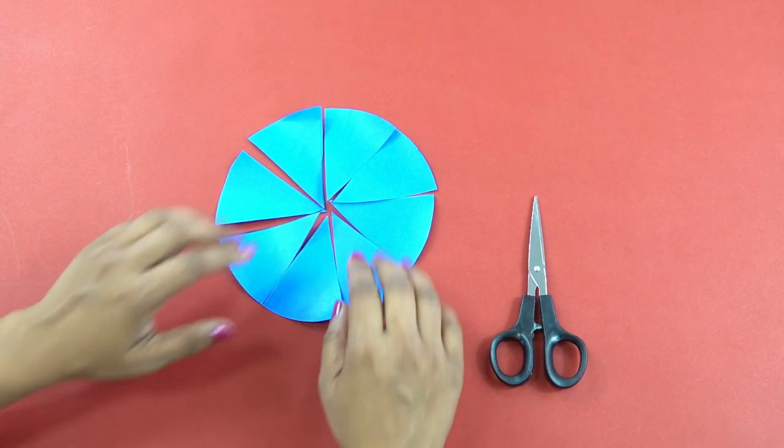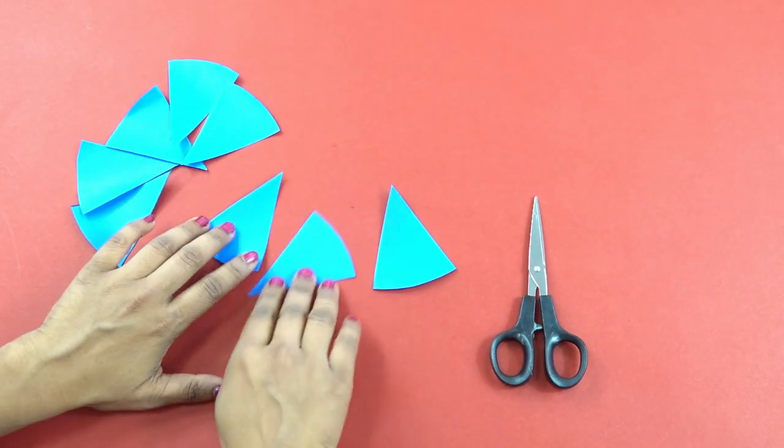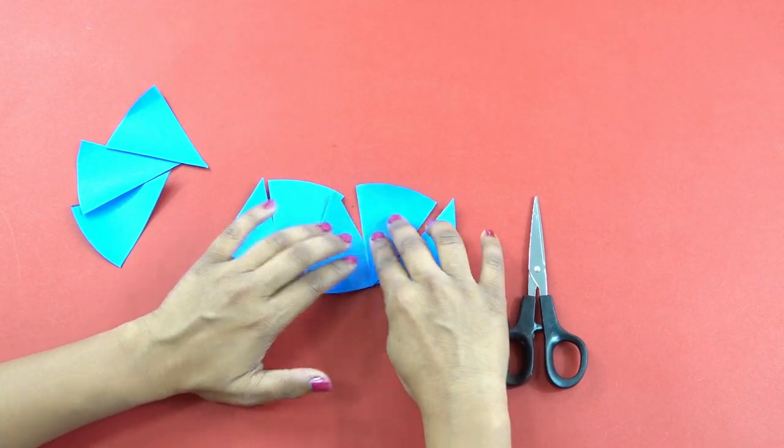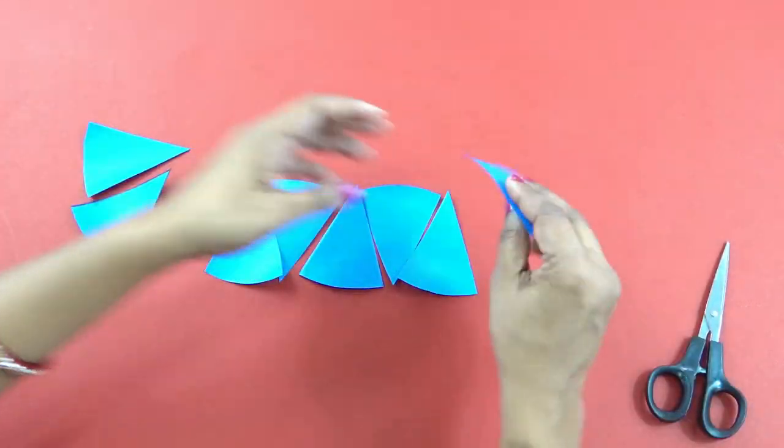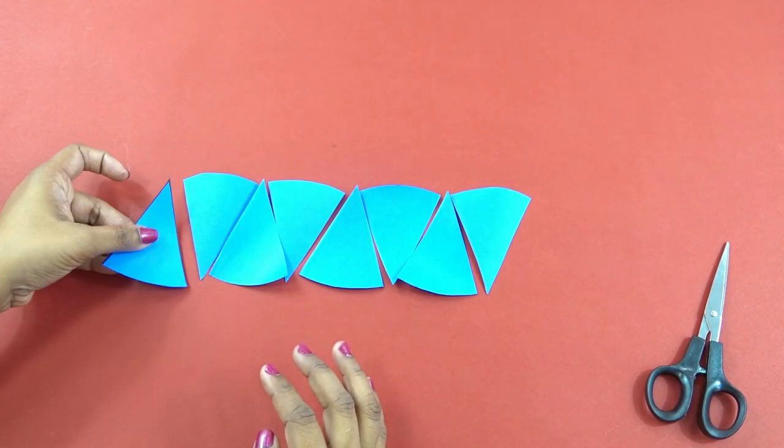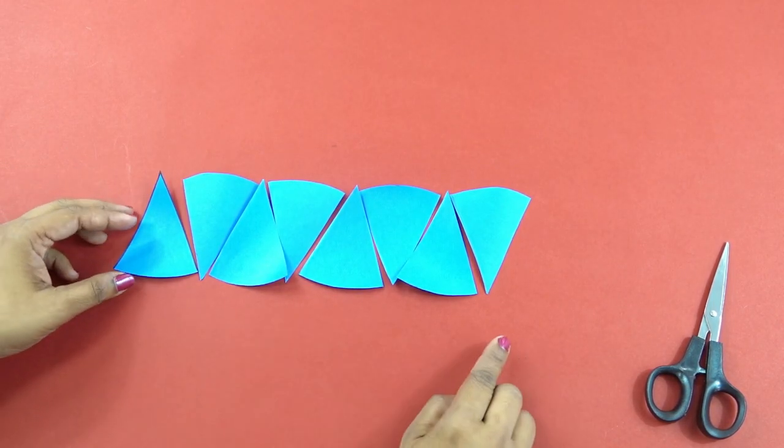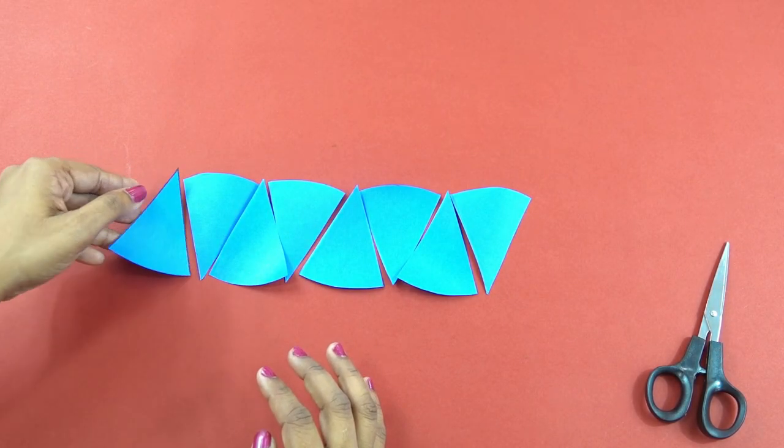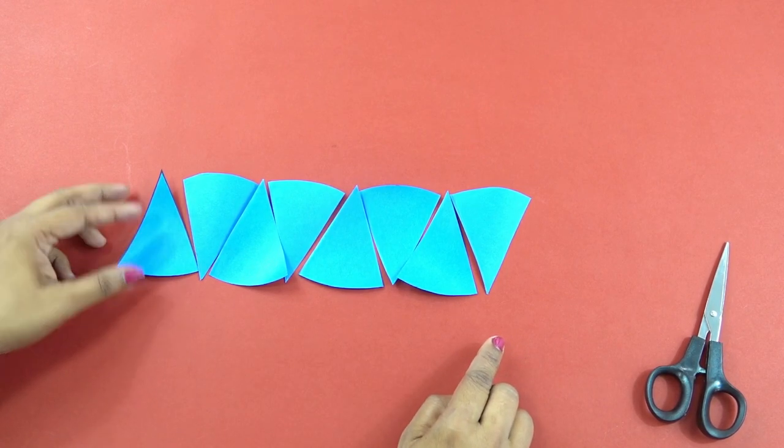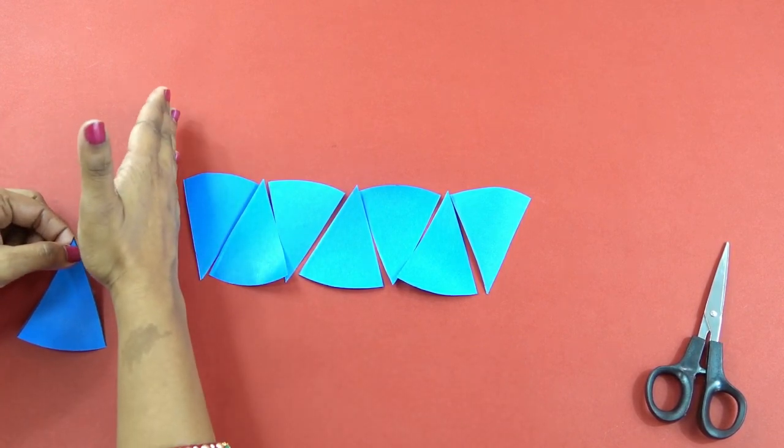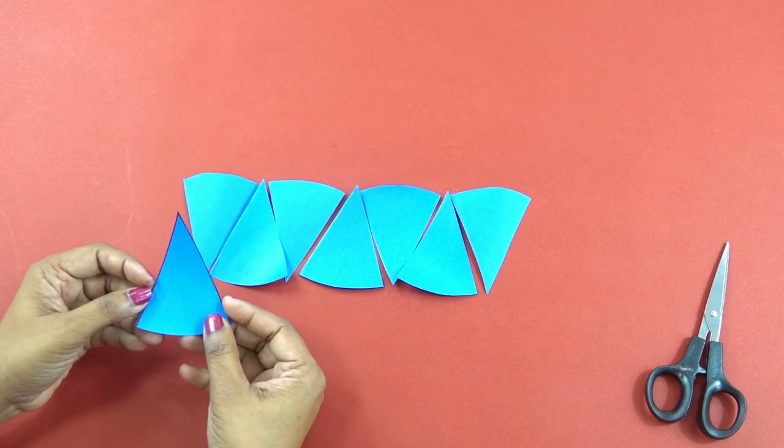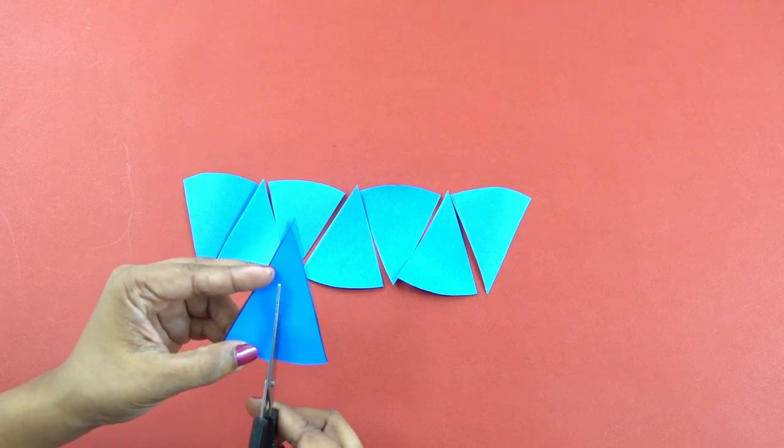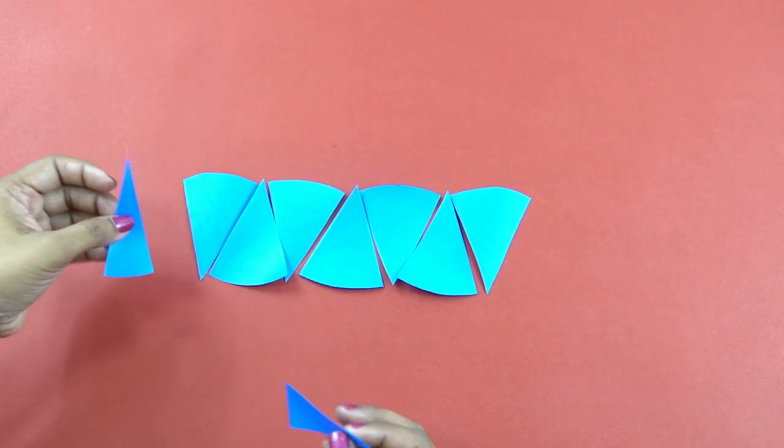Now let's arrange these eight parts into a rectangle, see this manner. Oh, where should I fix this? Now this looks somewhat like a rectangle, but there is a length or a straight line missing. So what I would do is I will cut this into exact half and I will place this such that my almost rectangular figure from the circle has been made.